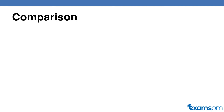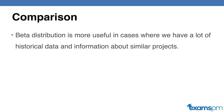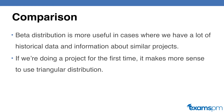Now let's do a comparison between the two types of calculations. Beta distribution is most helpful in cases where we have a lot of historical data and information about similar projects. If we do have that information, we are better able to calculate the most likely scenario, so it makes more sense to put more weight on it. But if you're doing the project for the first time and don't have historical data, there's no basis for a weighted average, so it would make more sense to use a triangular distribution. More historical data — use beta. First time doing the project — use triangular.